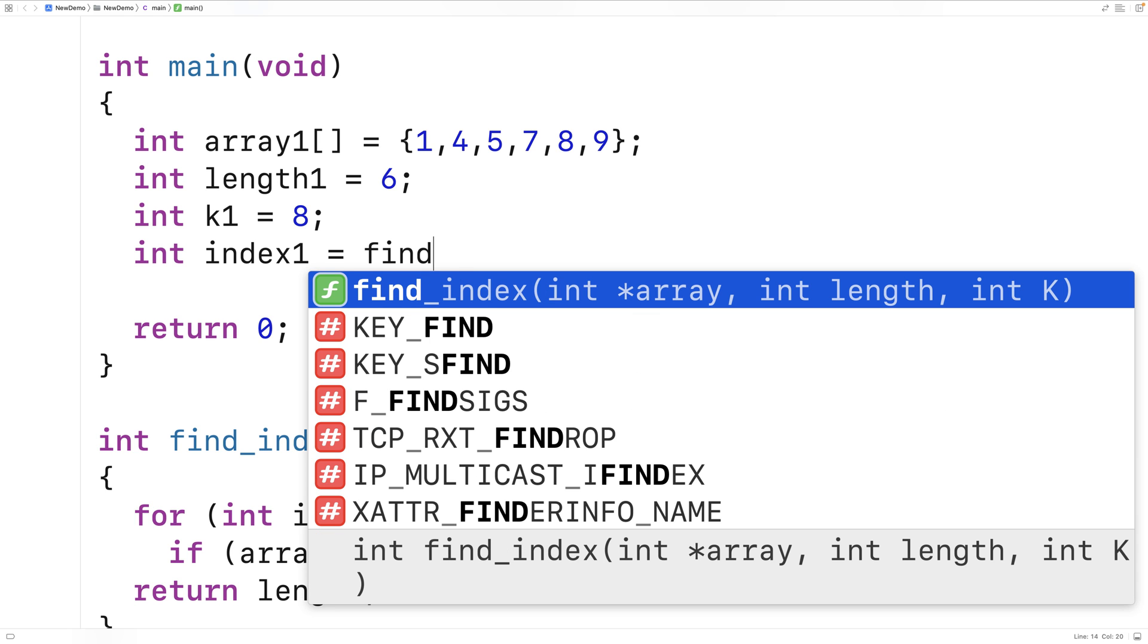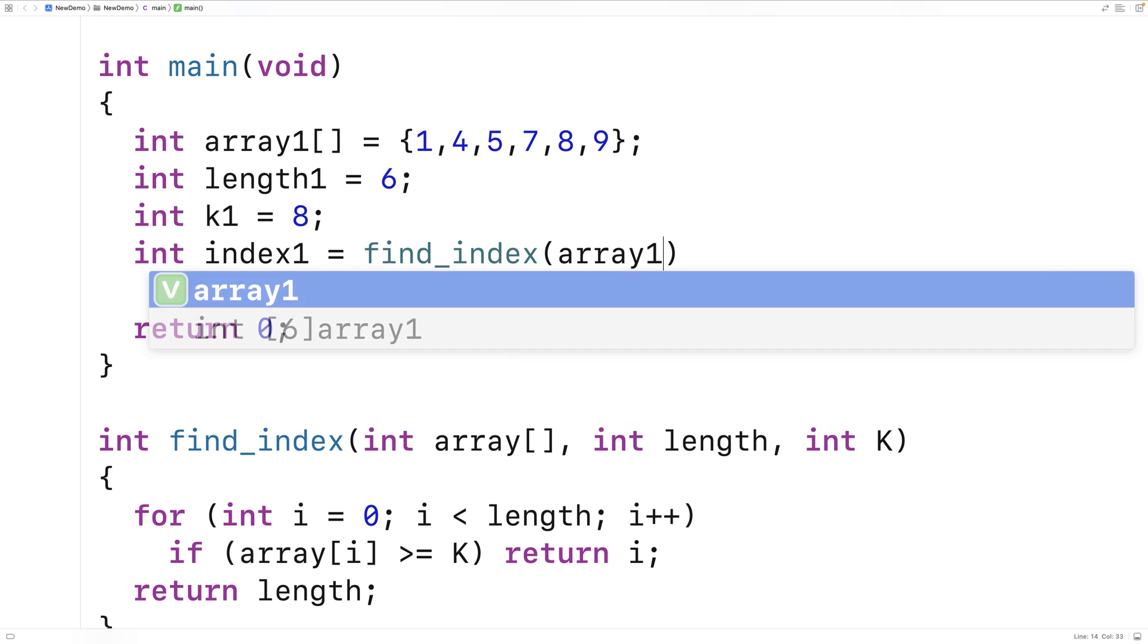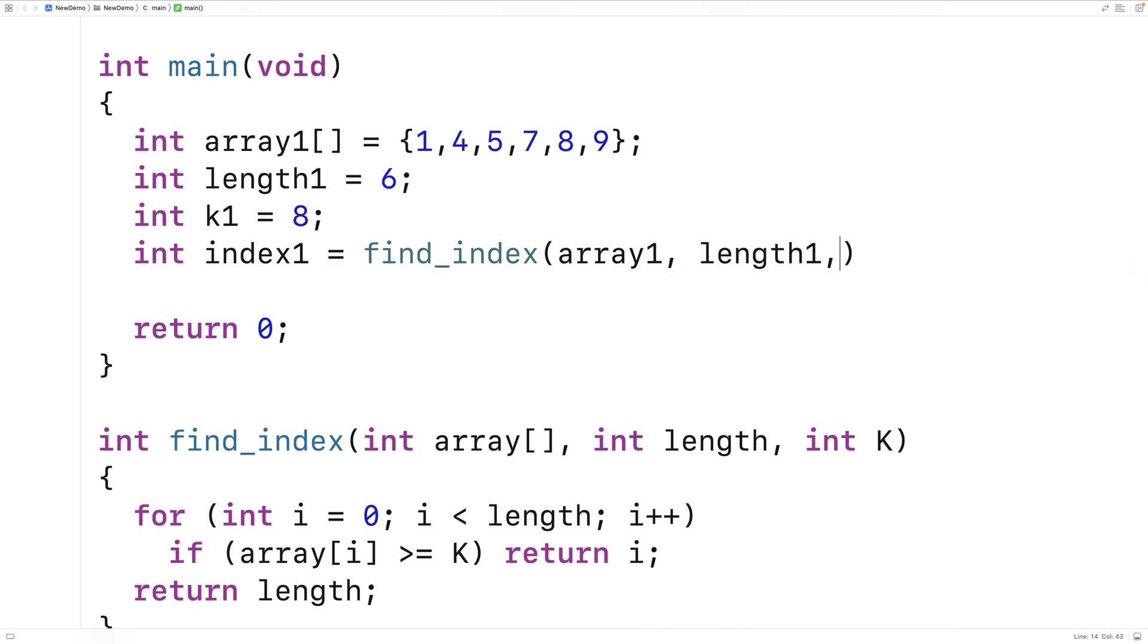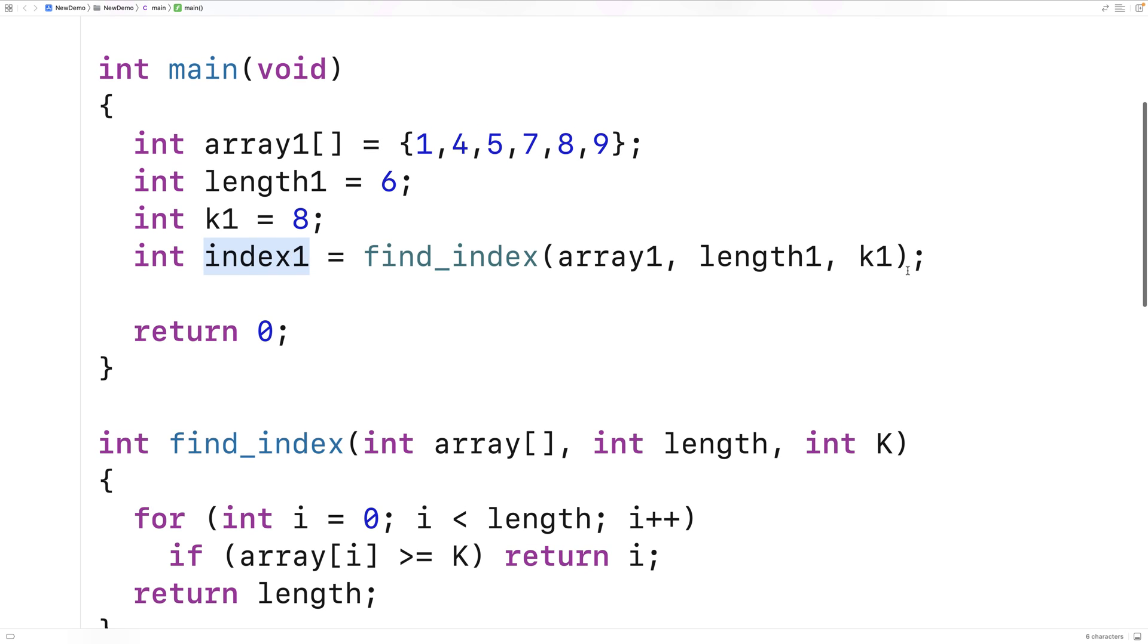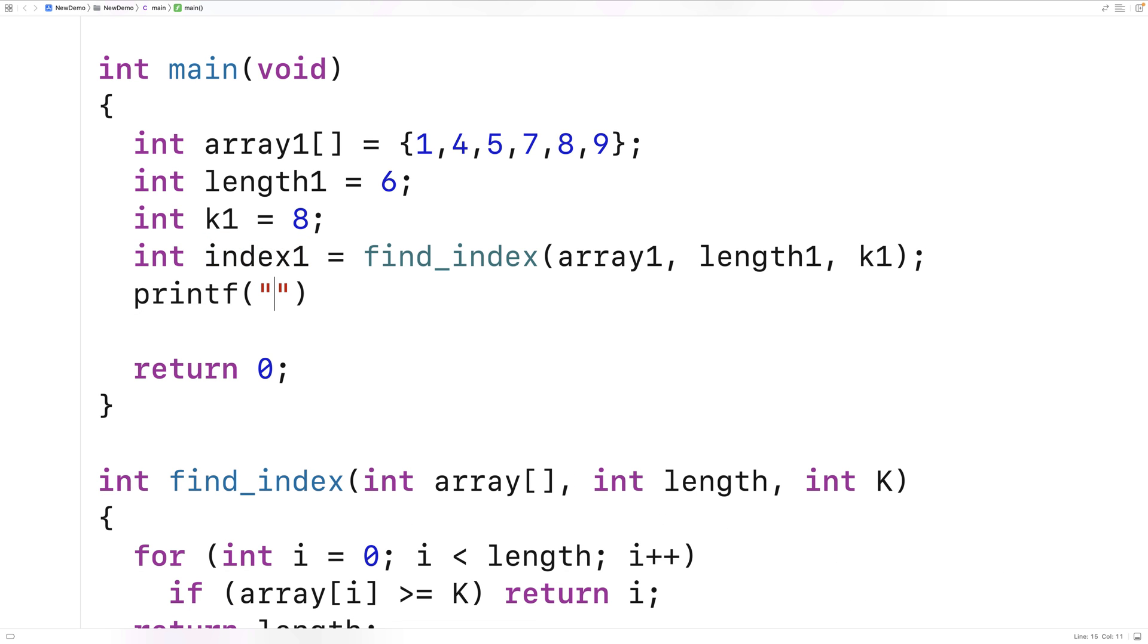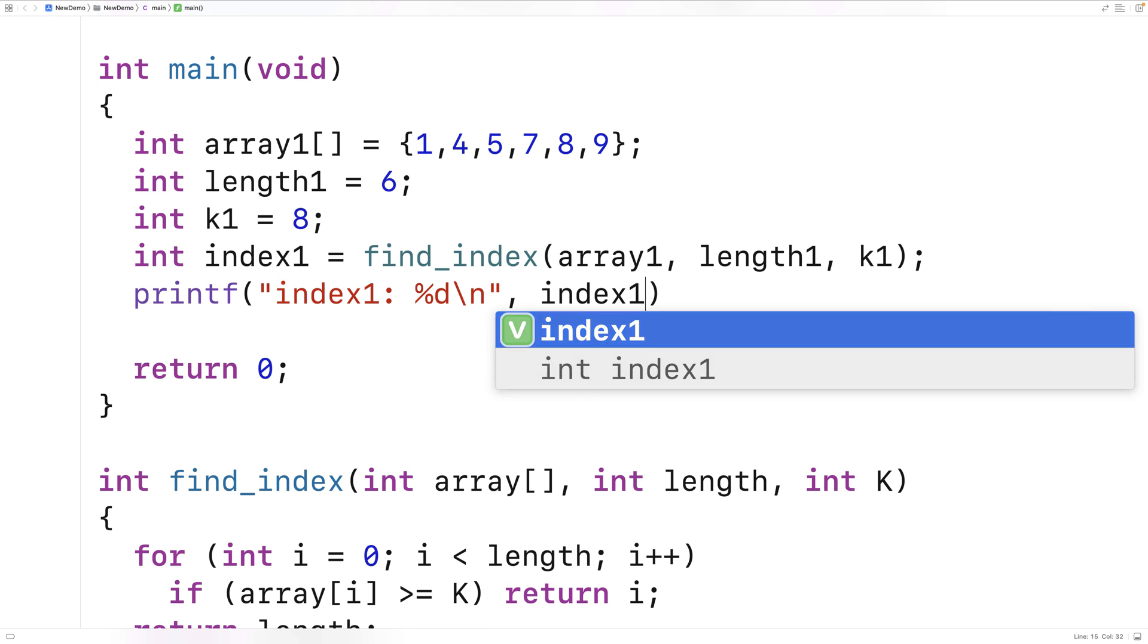Then we're going to try to call the function. So we'll say int index 1 to store the return value is equal to find_index array 1, length 1, k1. So 8 is at index 0, 1, 2, 3, 4. So we expect index 1 to be 4. Let's print it out though and see. So we'll say printf index 1 percent d backslash n. And we're going to output index 1 as this integer here. And we'll also output a new line as well.